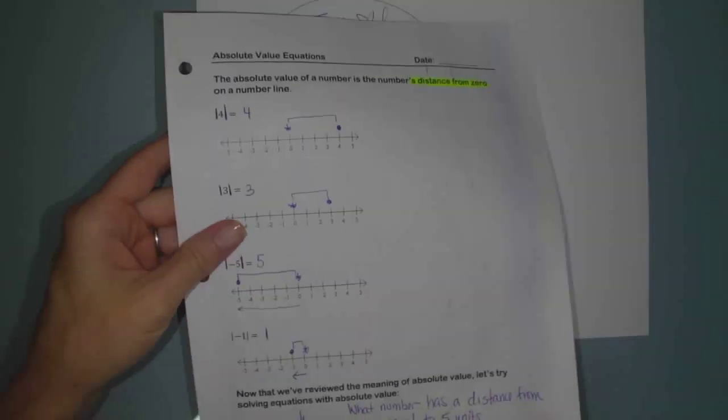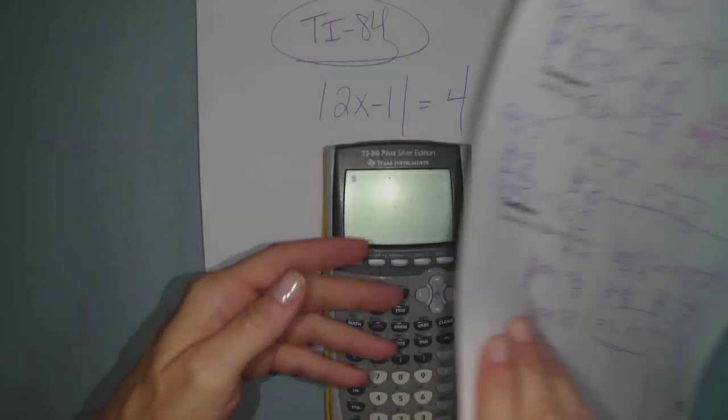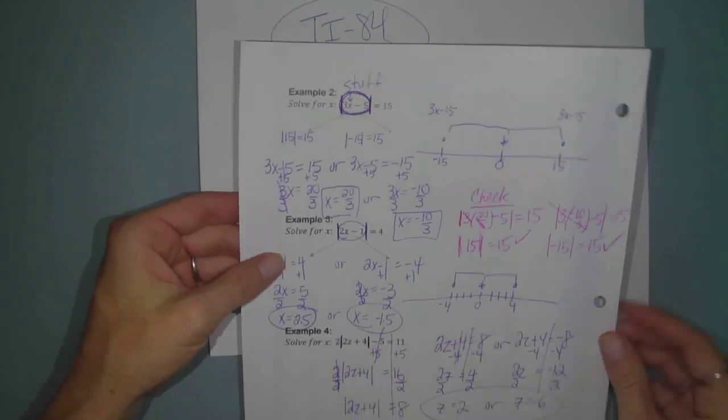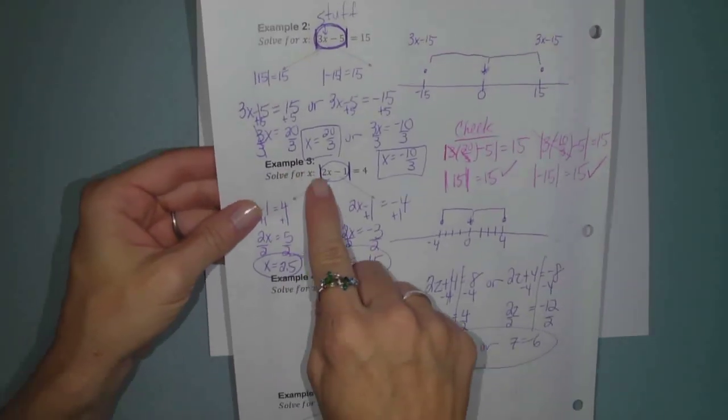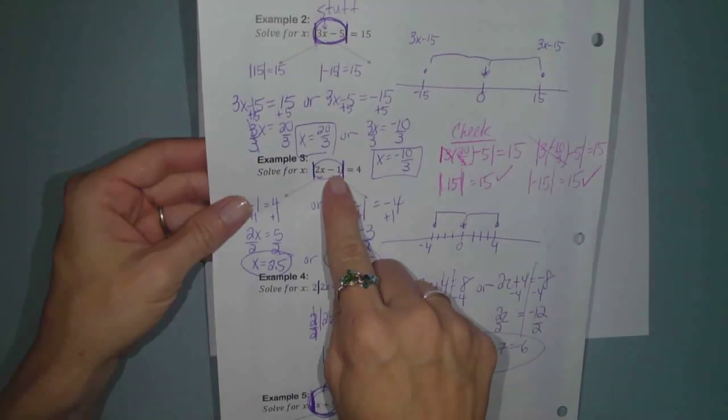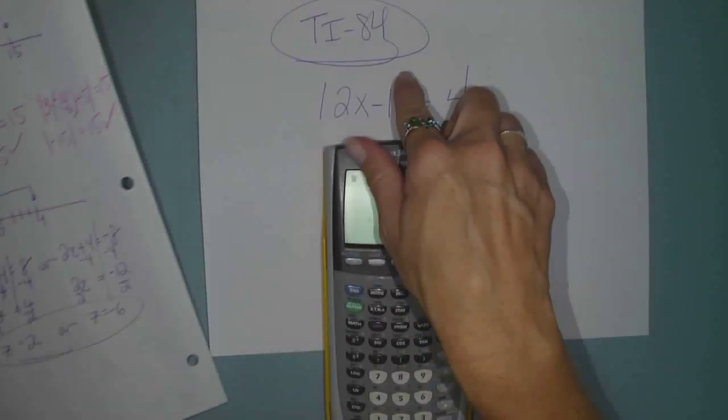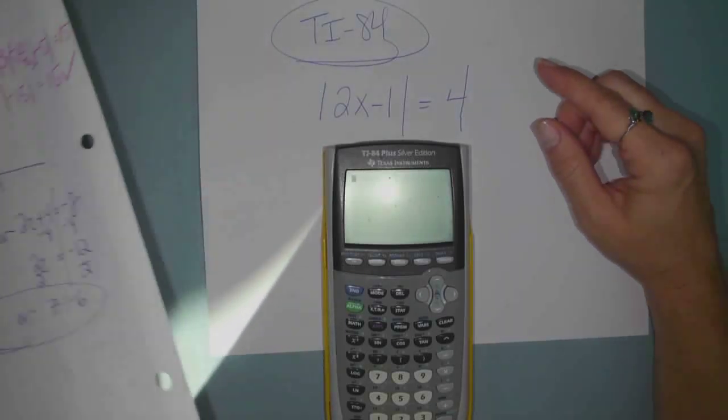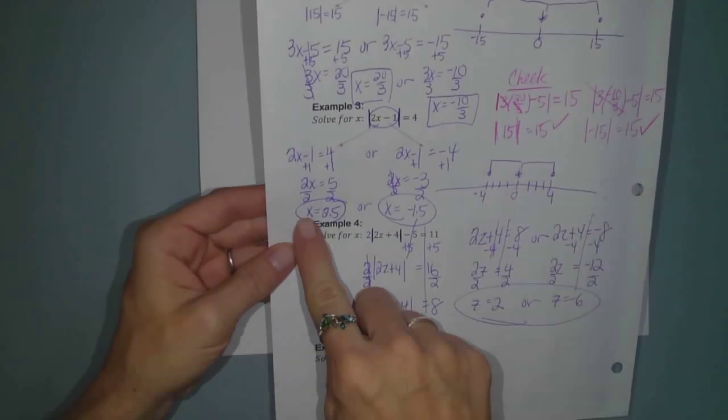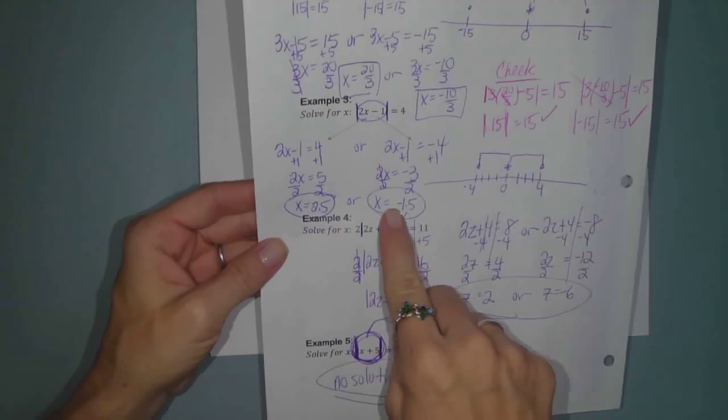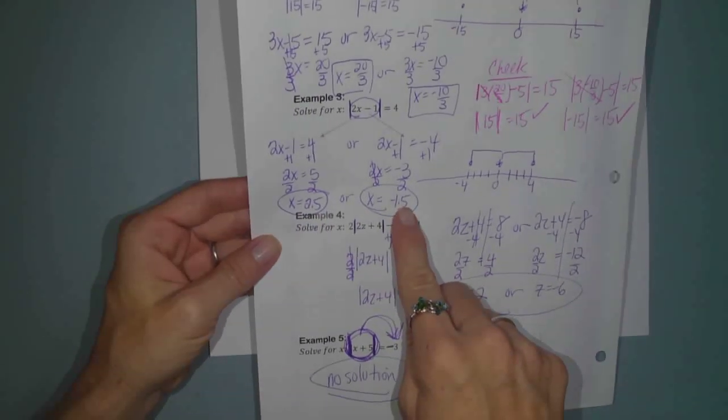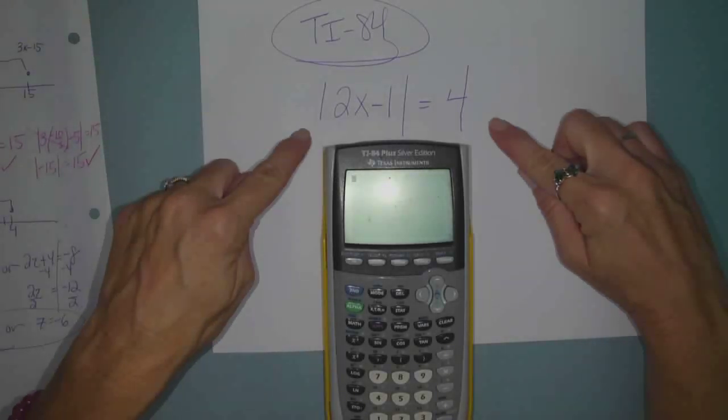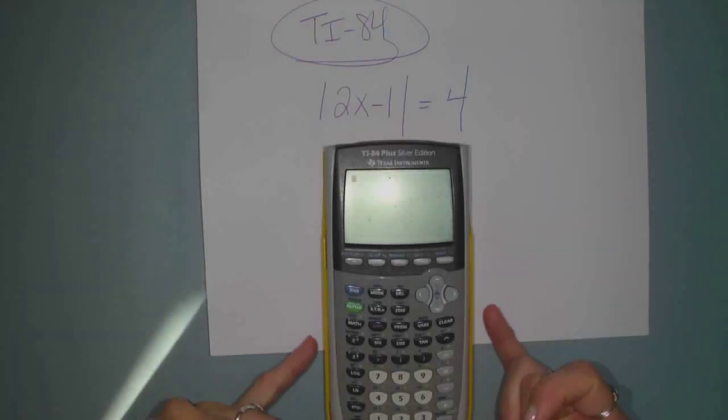Like we did these notes yesterday, absolute value equations. We filled out all of these great notes here. What I did is I rewrote example 3 from the back side. So example 3 was the absolute value of 2x minus 1 equals 4. So you see how I put this here? Let's recall our answers. So the answers we got by hand were x equals 2.5 and x equals negative 1.5. We did all this work. Check out how you can solve absolute value equations using the TI.